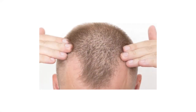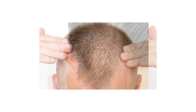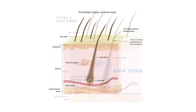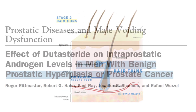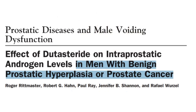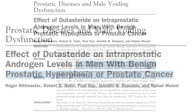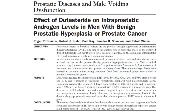It is plausible to argue that scalp DHT levels might take longer to reflect changes compared to prostate tissue DHT levels. The men in the study titled 'Effect of Dutasteride on Intraprostatic Androgen Levels in Men with Benign Prostatic Hyperplasia or Prostate Cancer' by Roger Rittmaster and colleagues have prostate tissue cells that have been altered, as they had either BPH or prostate cancer.